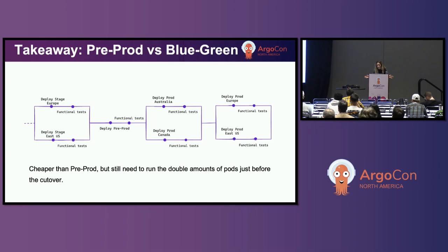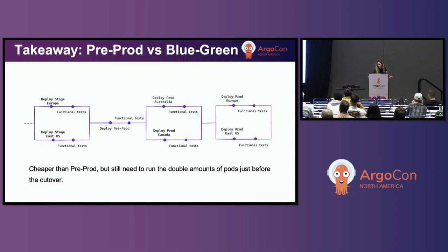The scope of a pre-prod environment is to test production configuration with zero impact. But pre-prod environments are expensive to run because alongside a new deployment of the service they require additional resources — like in our case, a database. With blue-green, you can get the same amount of validation and you'll only be running a double amount of pods just before the cutover. Until that point, because we set preview replica count to 1, we're just using yet another single pod.